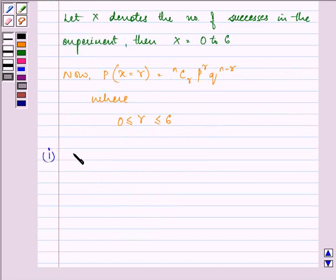Now, first of all, we need to find out probability of getting three heads. So that is n choose r, here n is six choose r is three, p raised to the power r, q raised to the power n minus r.